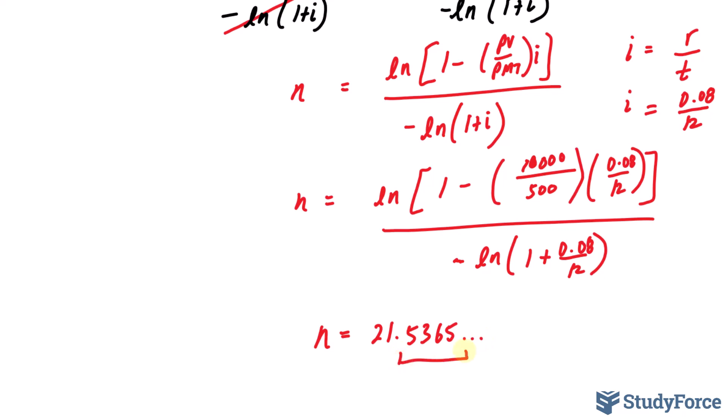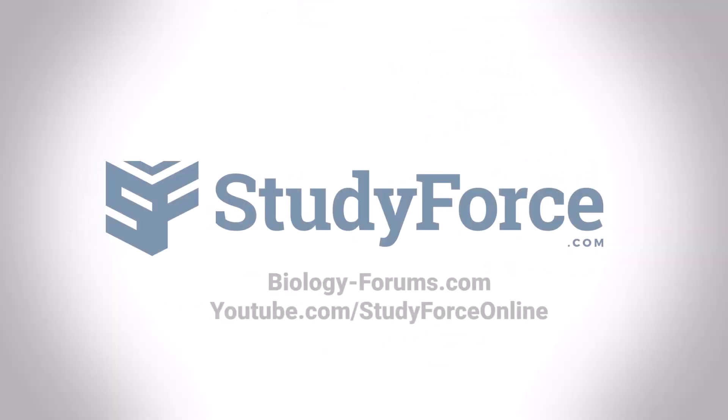In the next video, I'll show you how to deal with partial periods. As you can see, 21 is too little, and 22 would be too much. So we'll look at two options on how to pay that partial period, considering its future value.